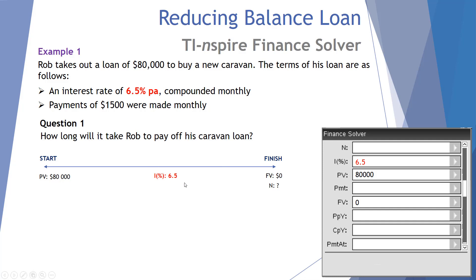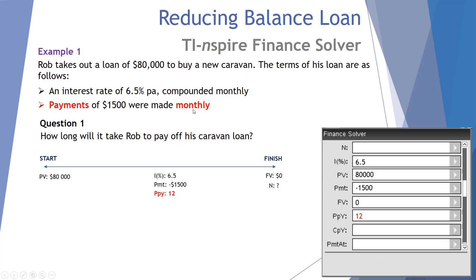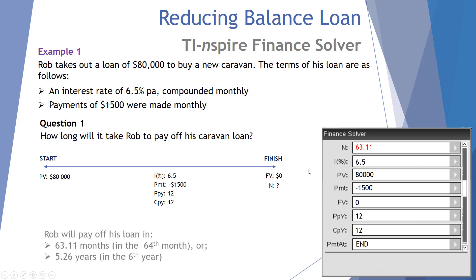The interest rate is 6.5% per annum — the finance solver always expects the rate in percent per annum. The payment goes in as negative $1,500 because when you pay money the cash flow is negative. Payments per year is 12 because they're monthly, and compounding periods per year is also 12. We hit payment at end. Pressing enter gives us 63.11 months to pay off the $80,000 loan — meaning it's paid off in the 64th month, or 5.26 years, sometime in the sixth year.